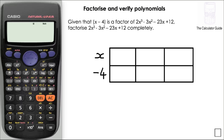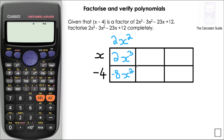My first term is 2x cubed, which goes in the top left cell of the grid. What do I need to multiply x by to give me 2x cubed? That's 2x squared, written up top. Then I multiply minus 4 by 2x squared to give minus 8x squared. Comparing minus 8x squared to the minus 3x squared in my polynomial, I'd need to add 5 more x squared to get that correct.